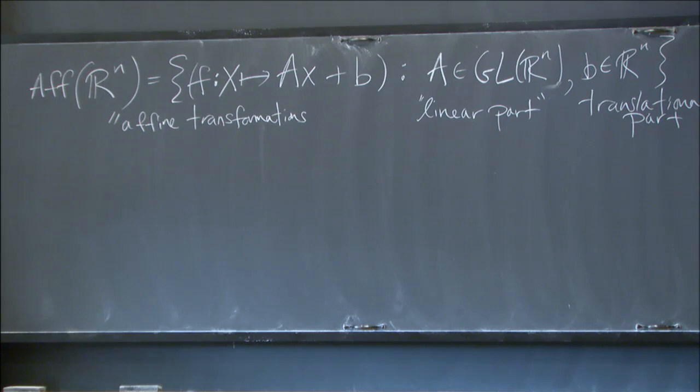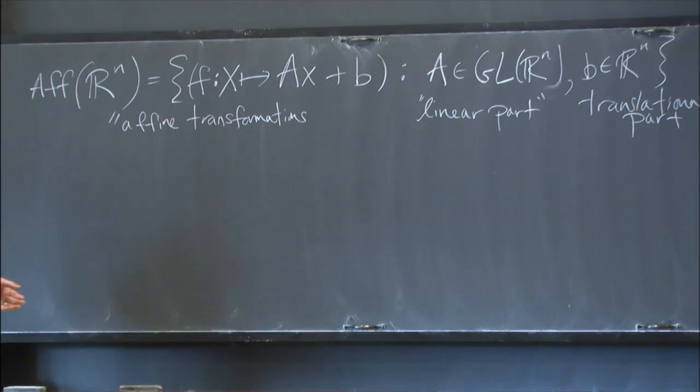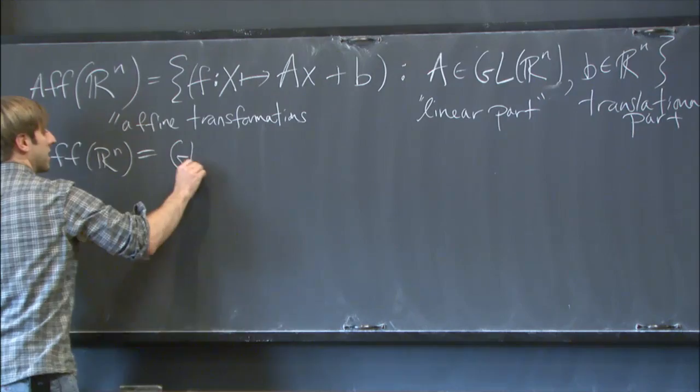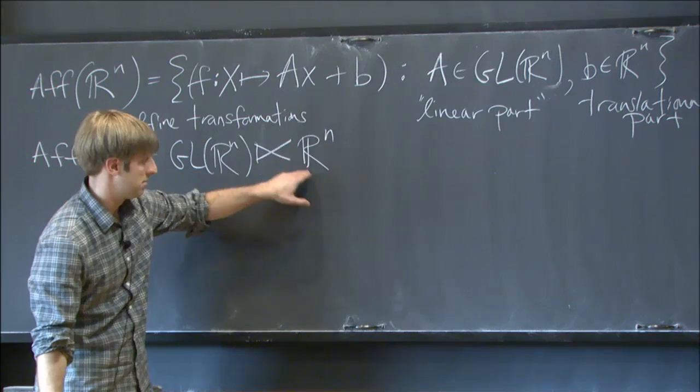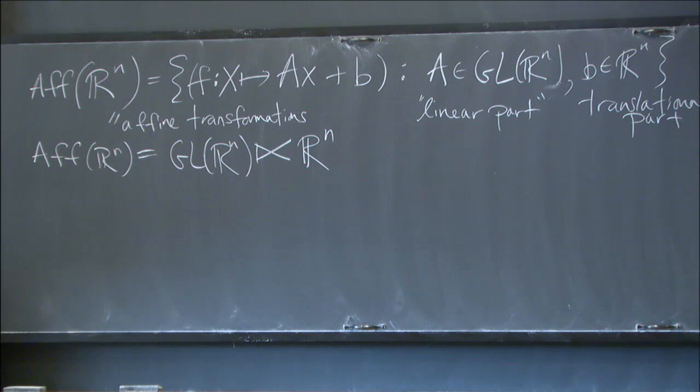These are the transformations we all learned about as children — you can rotate things, translate them, skew, stretch and squeeze. Just affine transformations. The affine group is a semi-direct product of the linear transformations with the translations, with the usual action of linear maps on R^n.